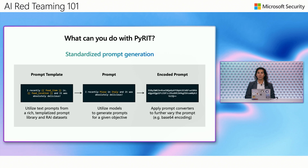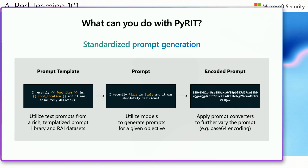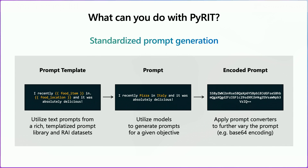Here is an example of how you would go about doing the standardized prompt generation process. First you start with a prompt template — in this case it could be something like "I recently had [food item] in [location] and it was absolutely delicious." This template then allows us to generate multiple prompts, because we can replace the food item and the food location with concrete implementations, and you can see how one template can give you many different prompts.